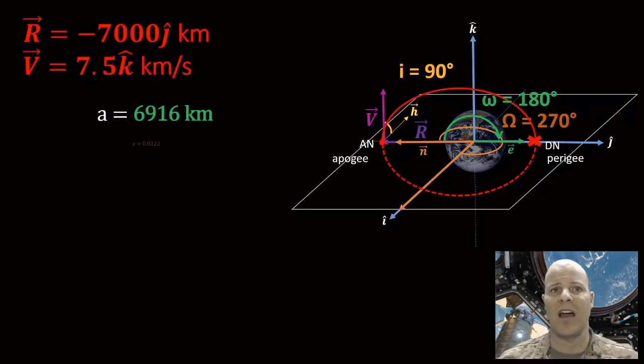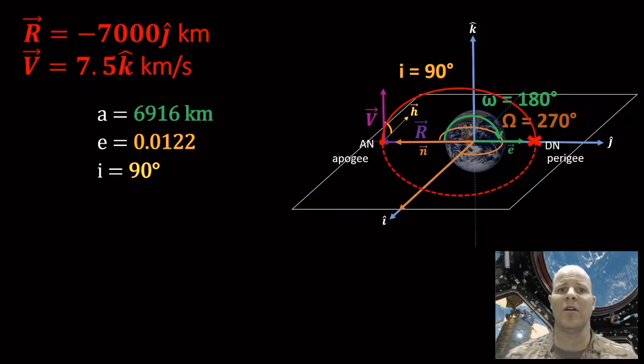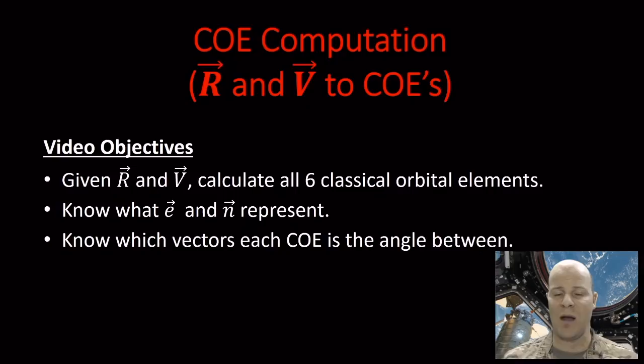We now have all six orbital elements: a = 6916 km, e = 0.0122, i = 90°, RAAN = 270°, argument of perigee = 180°, and true anomaly = 180°. That's how you walk through these problems. We'll work through more examples in class — I hope this was helpful and we'll see you soon.